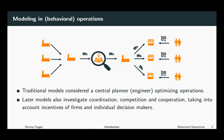Later models in operations took into account that in the production process, there are not only machines involved, but also humans. And unlike machines, humans react to incentives. You can't just tell a human what to do — humans take their own decisions. This means later models also investigate coordination, competition, and cooperation, taking into account the incentives of firms and individual decision makers, which means we now have to use game theoretic models.